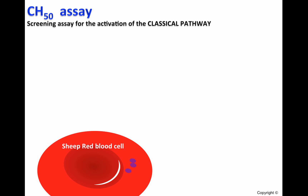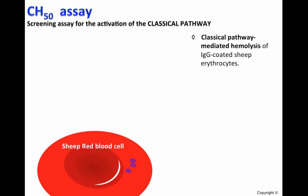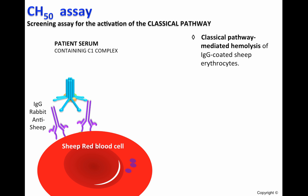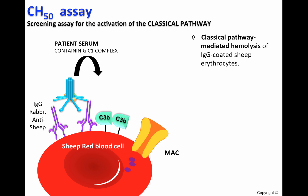The CH50 tests the functional capability of serum complement components of the classical pathway to lyse IgG-coated sheep erythrocytes. When IgG-coated sheep erythrocytes are incubated with test or patient serum, the classical pathway of complement is activated, which means that C3b will be deposited on the cell surface of the red blood cells. Later on, the membrane attack complex will be formed, resulting in hemolysis.